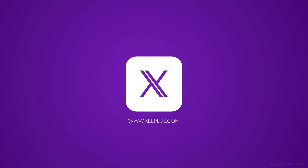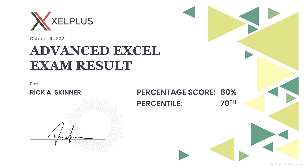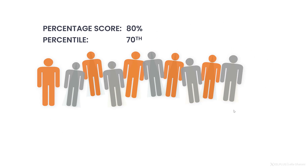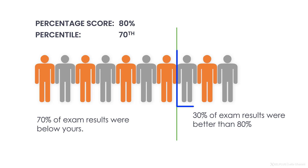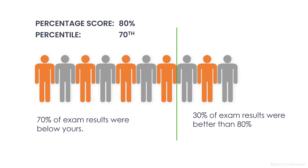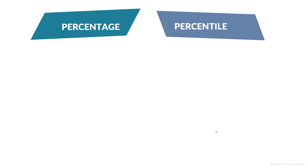Let's start with the definition. You just got your test results for an advanced Excel exam and you scored 80%. You're told that this was in the 70th percentile. This means that 70% of exam results were below yours and 30% of the results were better than your result, which was 80%. When we describe percentile, we use the word percentage, but they're two separate things.